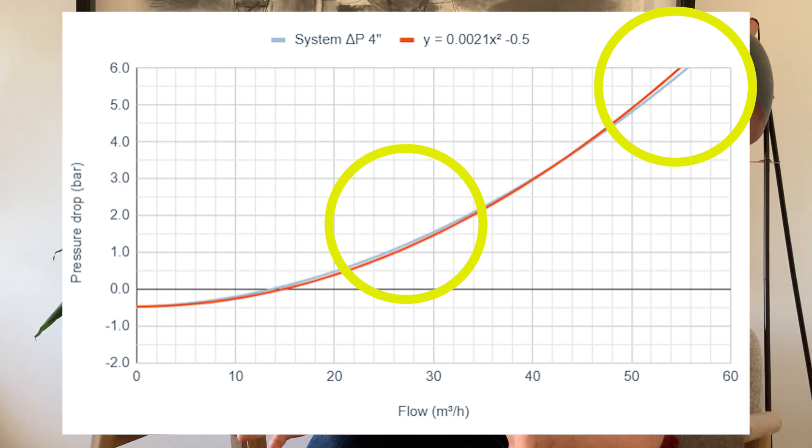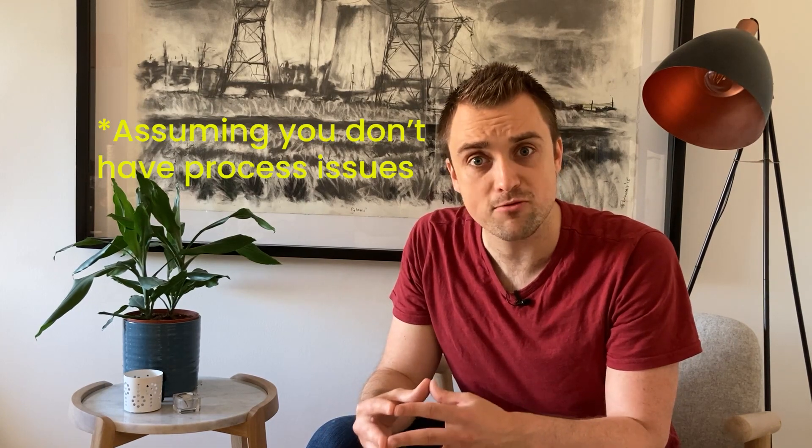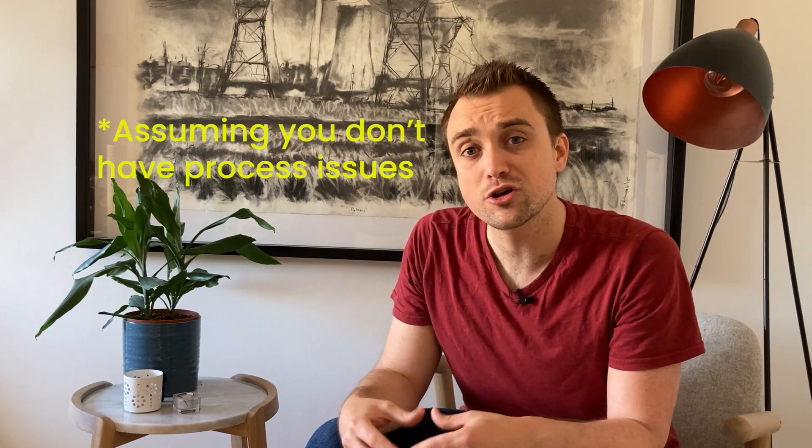A pipeline is fairly simple though. The more complicated the equipment, the more that square relationship will likely deviate and it might not be square at all - it might be some other exponent. The best thing you can do if you have plant data is plot that pressure drop against flow and see what the relationship should be. You can fit the curve to that data and use that as the normalization, so that you're not just looking at pressure drop as a single number.